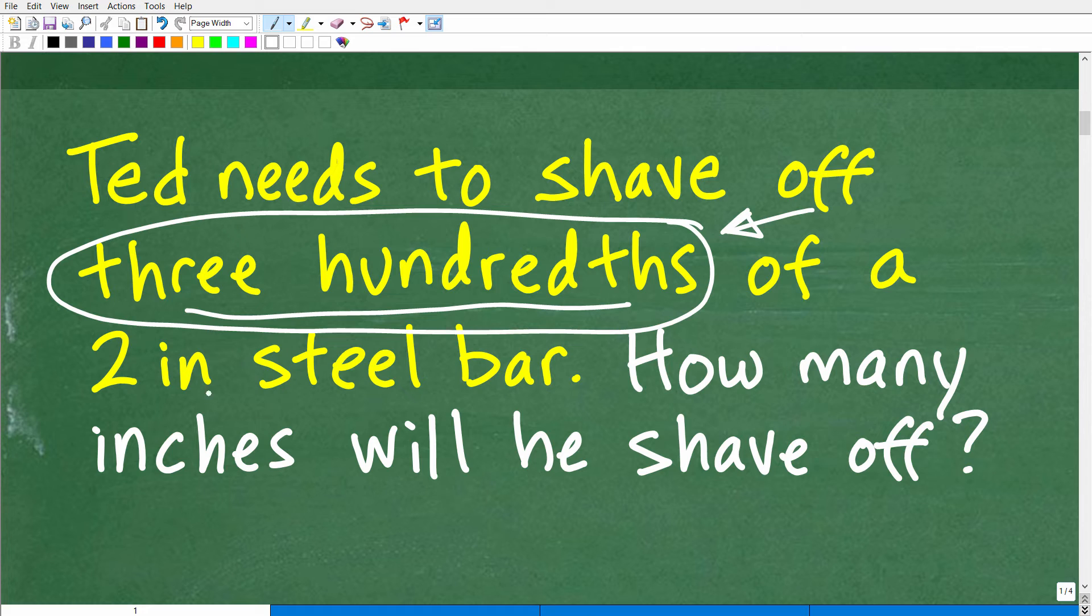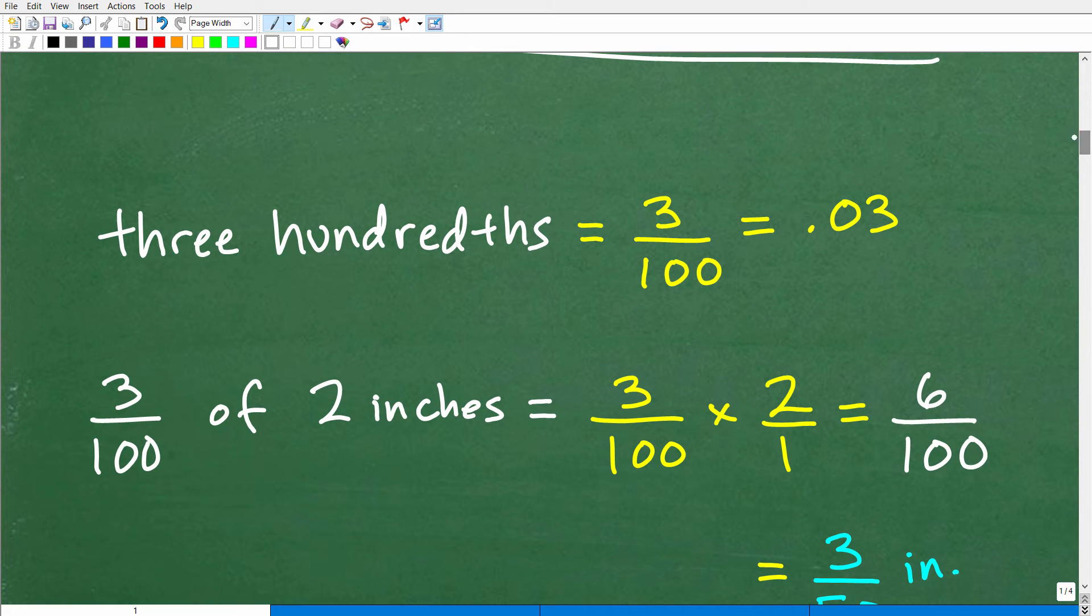You need to kind of brush off and review that stuff, especially if you're going to be working with math on an ongoing basis. But we need to understand what does hundredths mean? What does hundredths actually mean mathematically? How can we create a number from that? So we've got to figure this out, right? So to find out what hundredths of a 2-inch steel bar is, we need to express hundredths in a different way. So we're going to talk about that in a second. But the question is, how many inches will we need to shave off? So we've got to figure out what hundredths of 2 is, hundredths of 2 inches is.